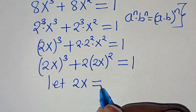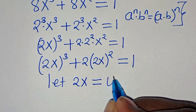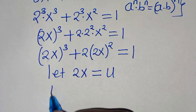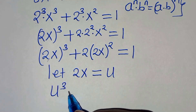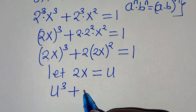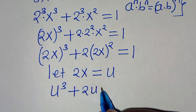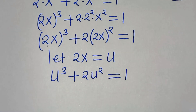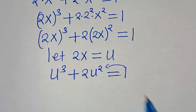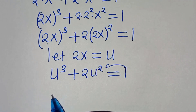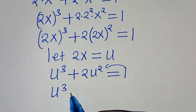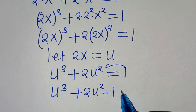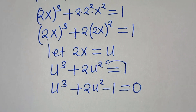We let u = 2x and substitute, giving us u to the power of 3 plus 2u squared, which is equal to 1. Taking 1 to the left-hand side, we have u to the power of 3 plus 2u squared minus 1, which equals 0.